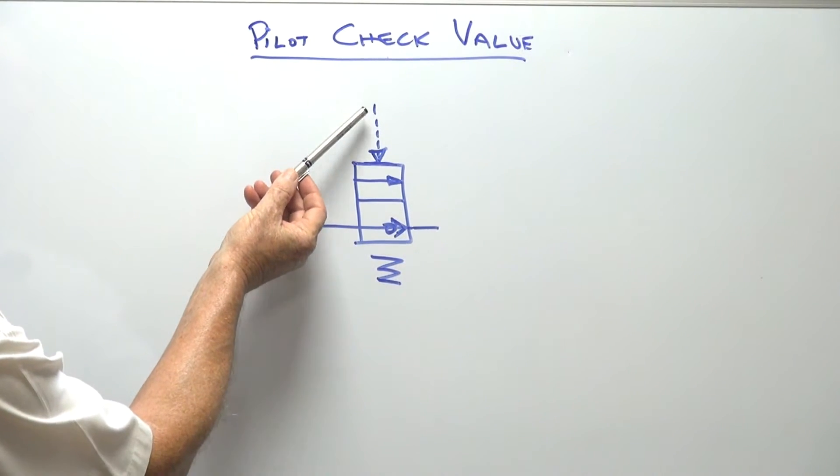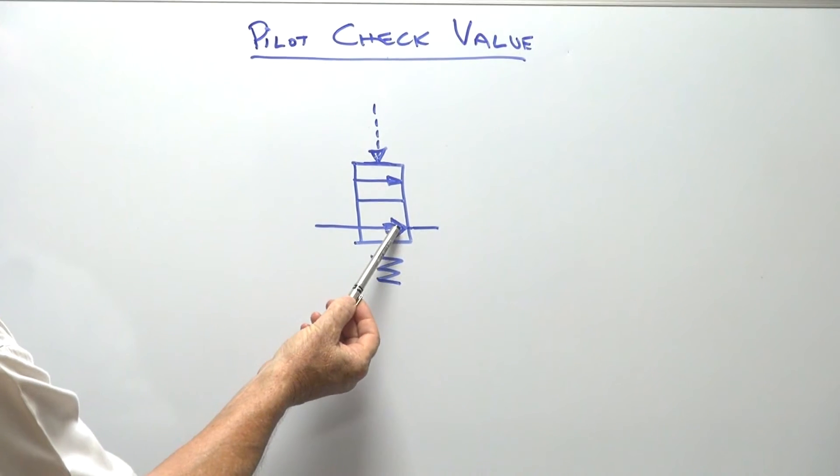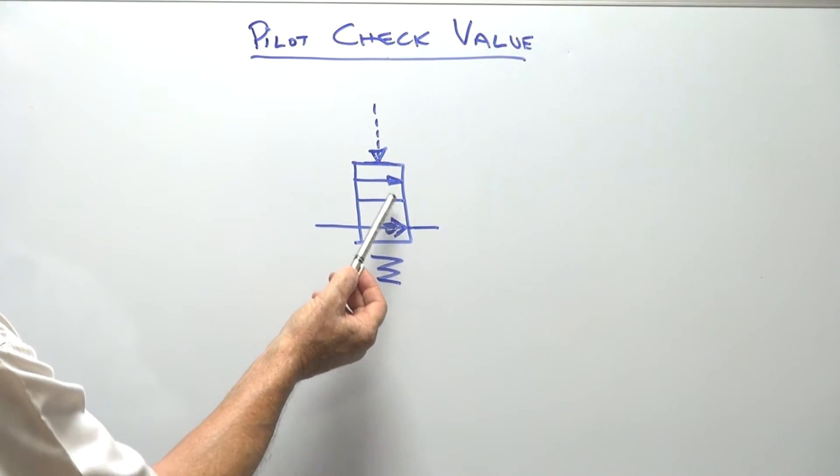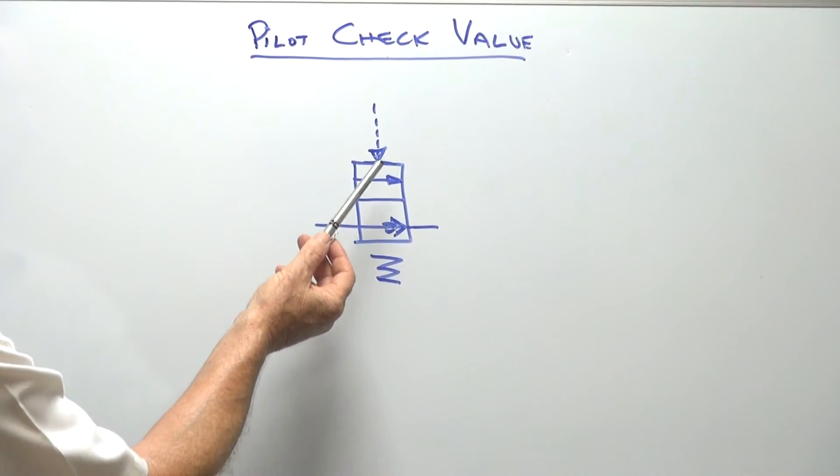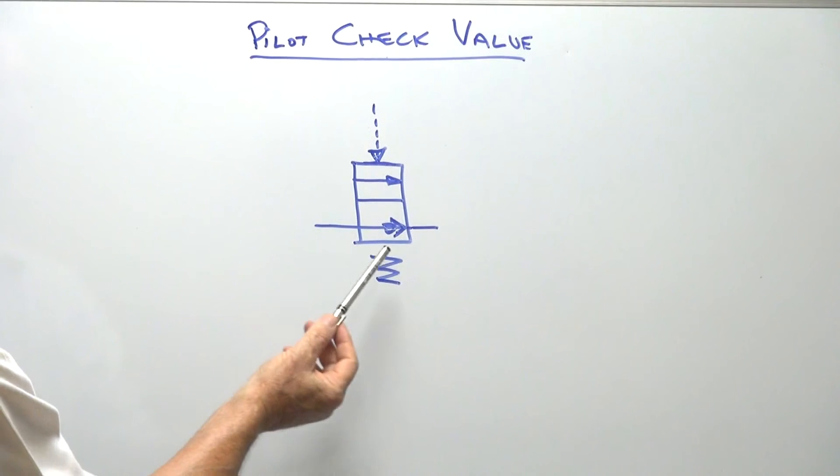We've got our air pilot signal at the top, we've got our flow through the valve and a check. All free flow. So when the actual unit does not have any air signal on the top, it's under the action of the spring.